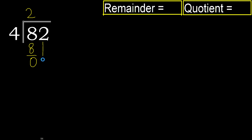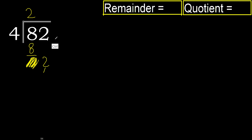Next, bring down — eliminate 0 on this side, giving 2. 2 is less, therefore next digit: that is not a number, therefore finish with 0.